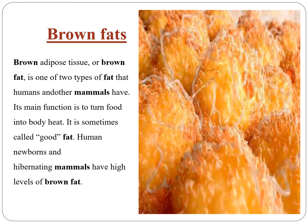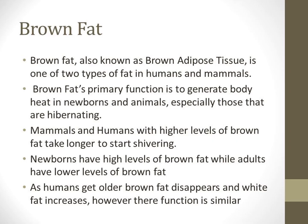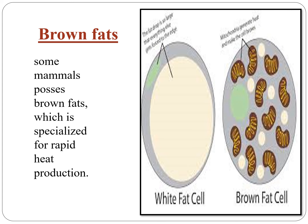Next is brown fat. Brown adipose tissue, or brown fat, is one of the two types of fat that humans and other mammals have. Its main function is to turn food into body heat. It is sometimes called good fat. Newborns and hibernating mammals have a high level of brown fat. Brown fat's primary function is to generate body heat in newborns and hibernating animals. Mammals and humans with high levels of brown fat take longer to start shivering. As humans get older, brown fat disappears and white fat increases. Some mammals possess brown fat which is specialized for rapid heat production.